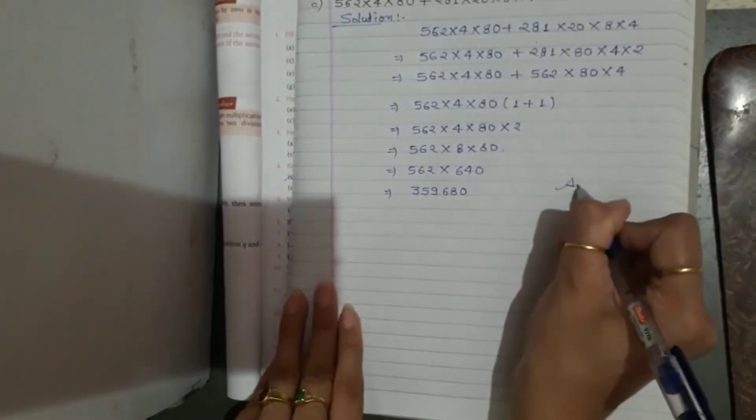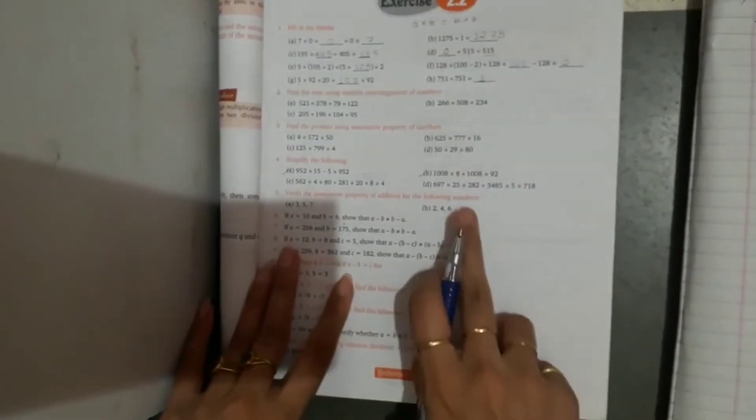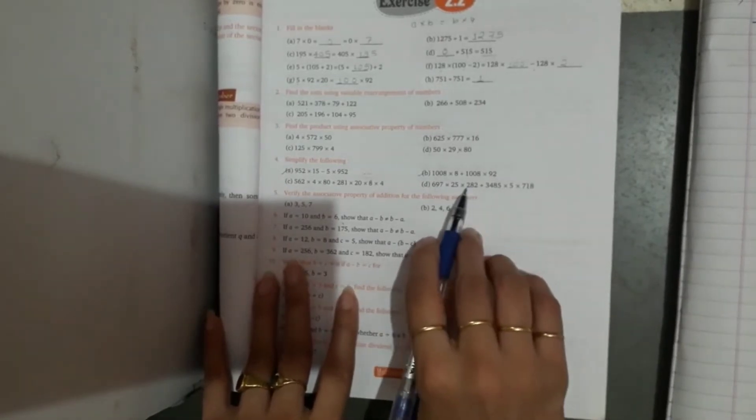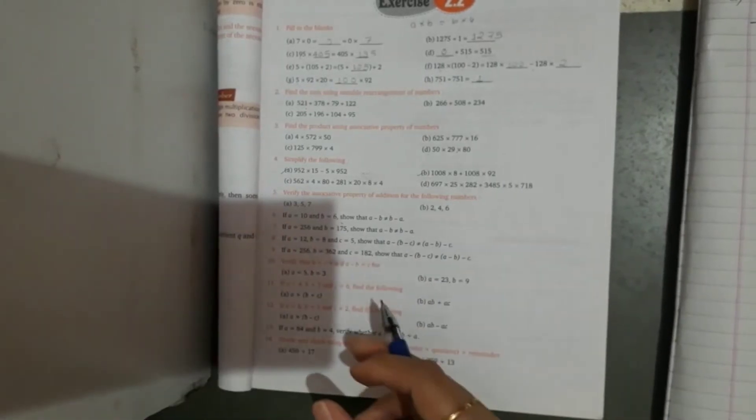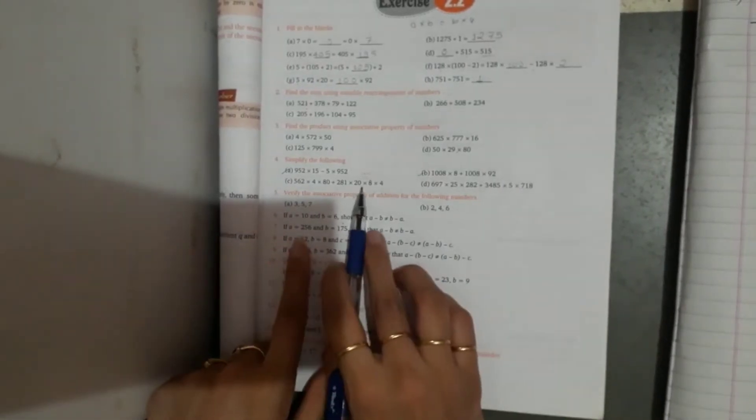This is your answer: 3,59,680. In this type of question you have to handle it by breaking it down and applying the appropriate property. Now let's switch to question number 5.